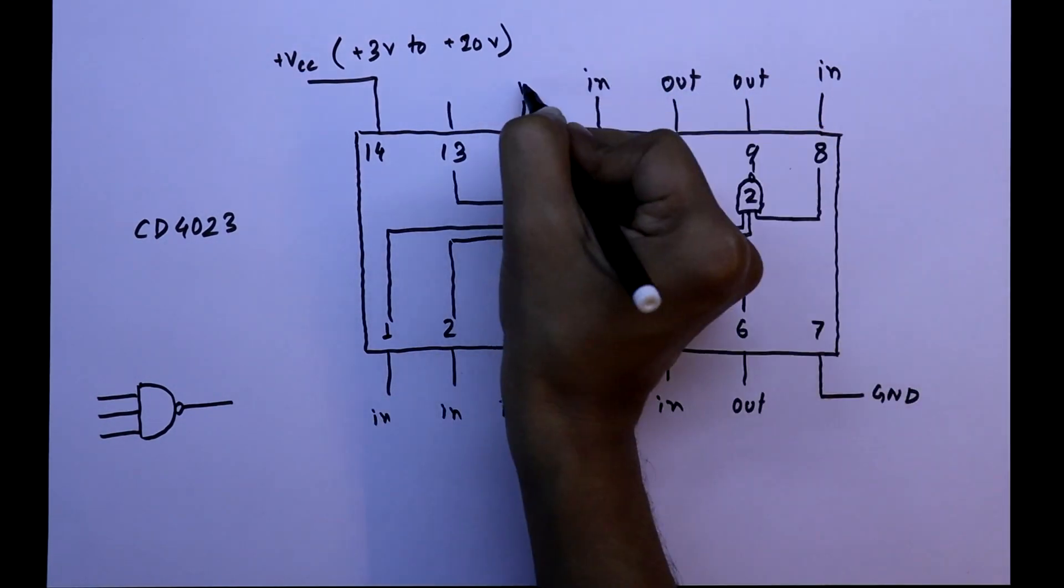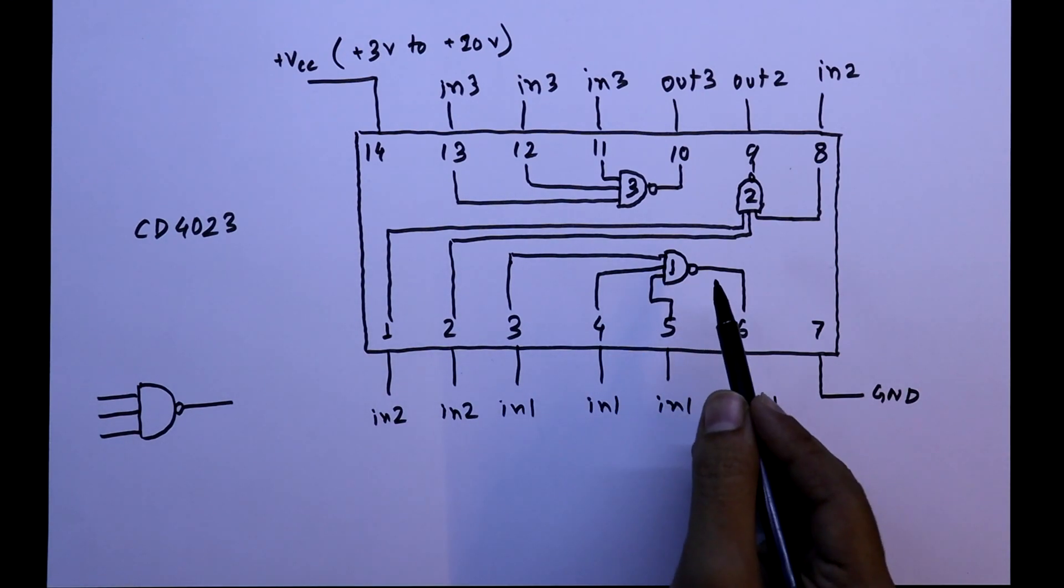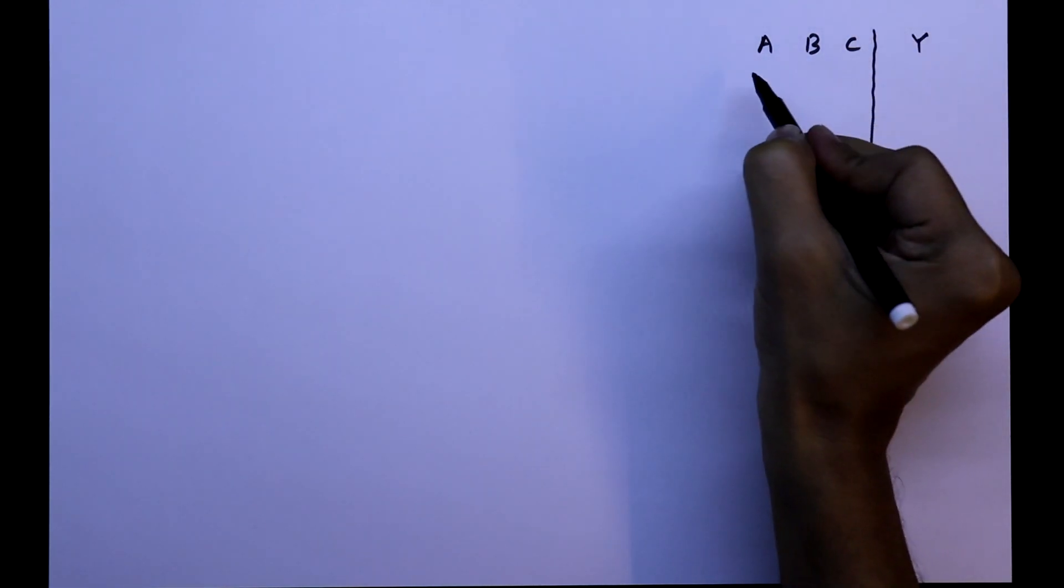So, this is the pin diagram of this IC. And for the practical, we will use only one NAND gate. We will take 3 inputs as ABC and we will take Y as an output.